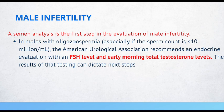Male infertility: a semen analysis is the first step in evaluation. In males with oligospermia, especially if the sperm count is less than 10 million, the American Urological Association recommends an endocrine evaluation with FSH level and early morning total testosterone levels. The results of that testing dictate next steps.